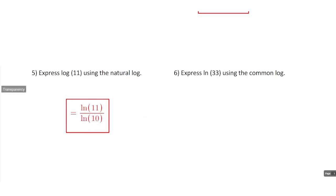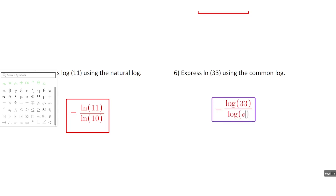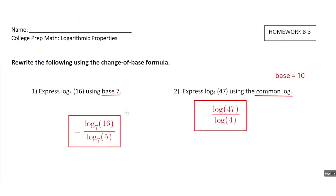Number 6 says express the natural log of 33 using the common log. This is going from the natural log to the common log, rather than number 5 which was the other way around. So we write this as log of 33 divided by log of Euler's number e. That's the change of base formula.